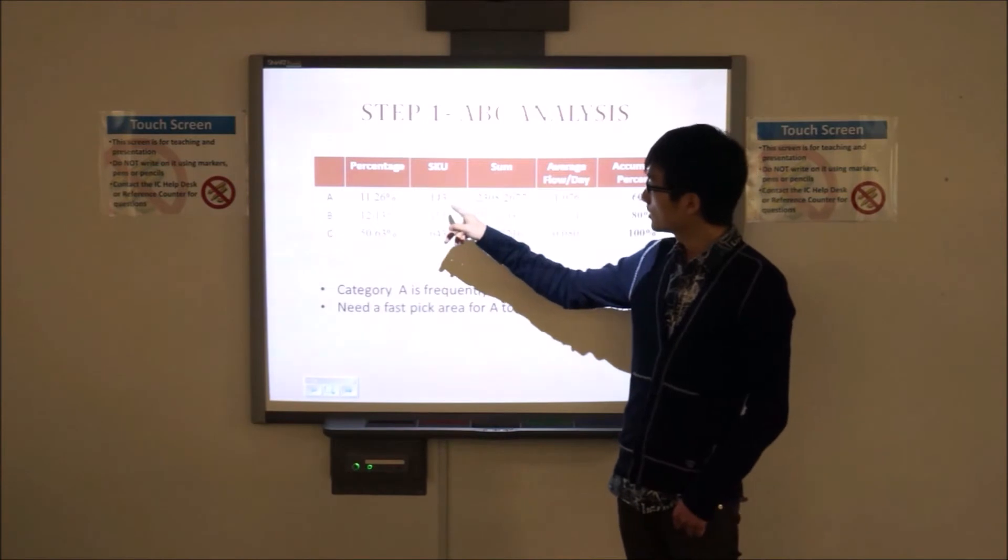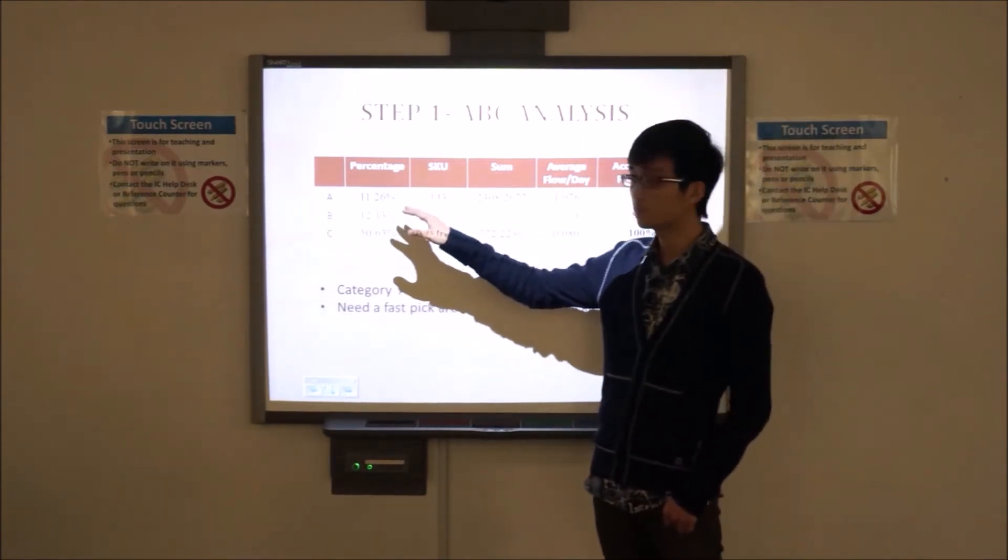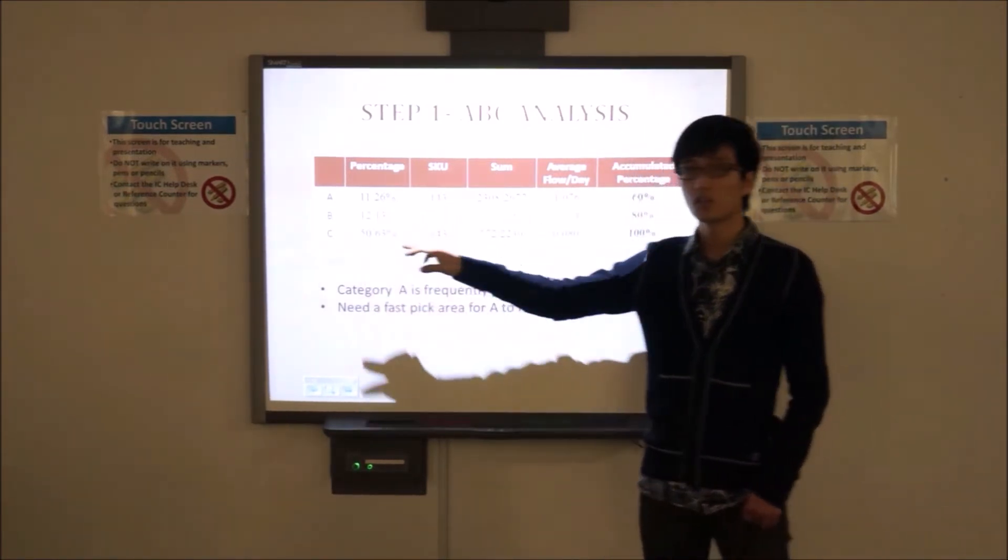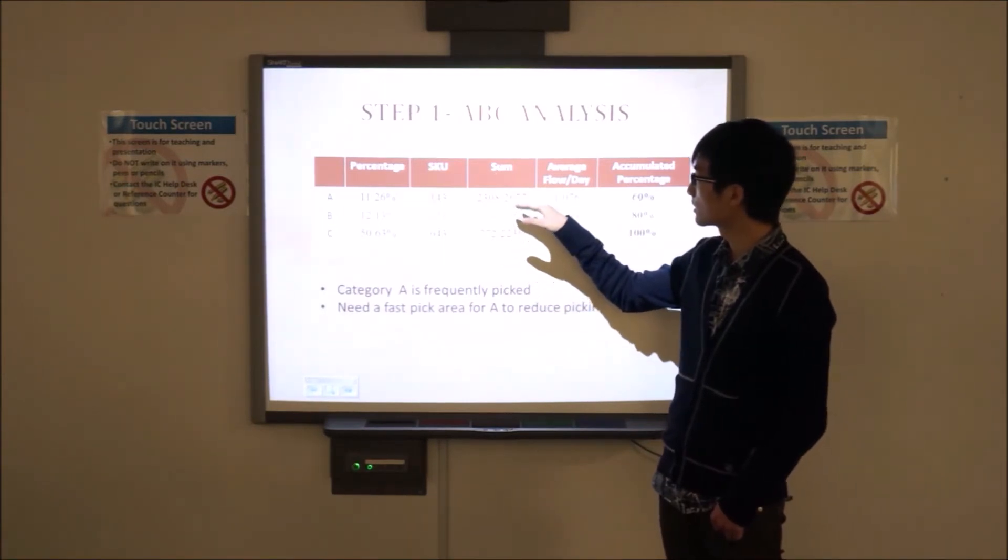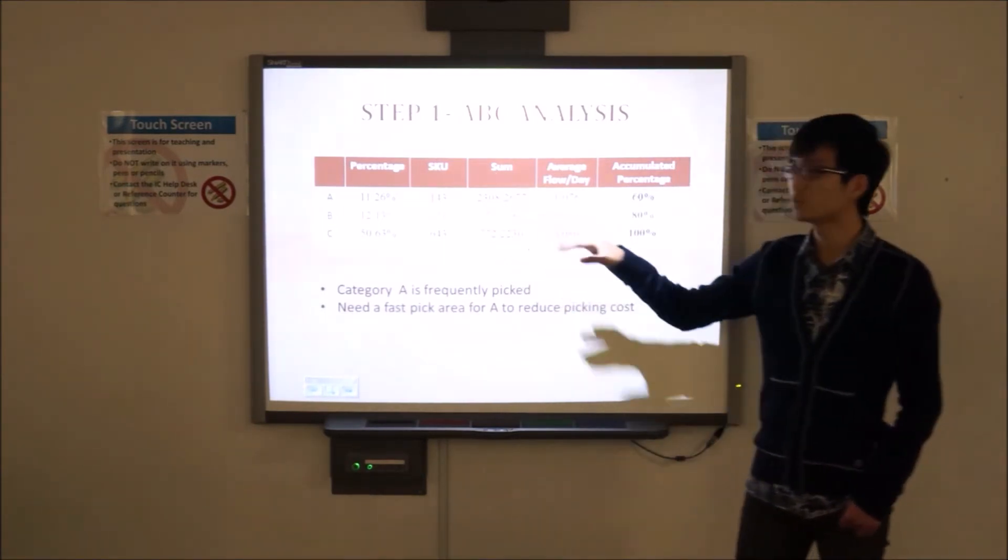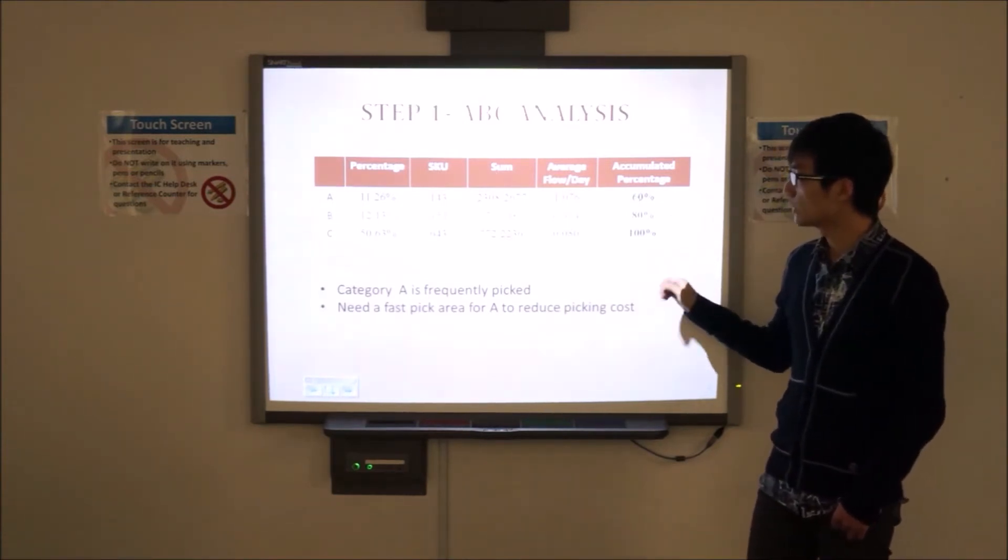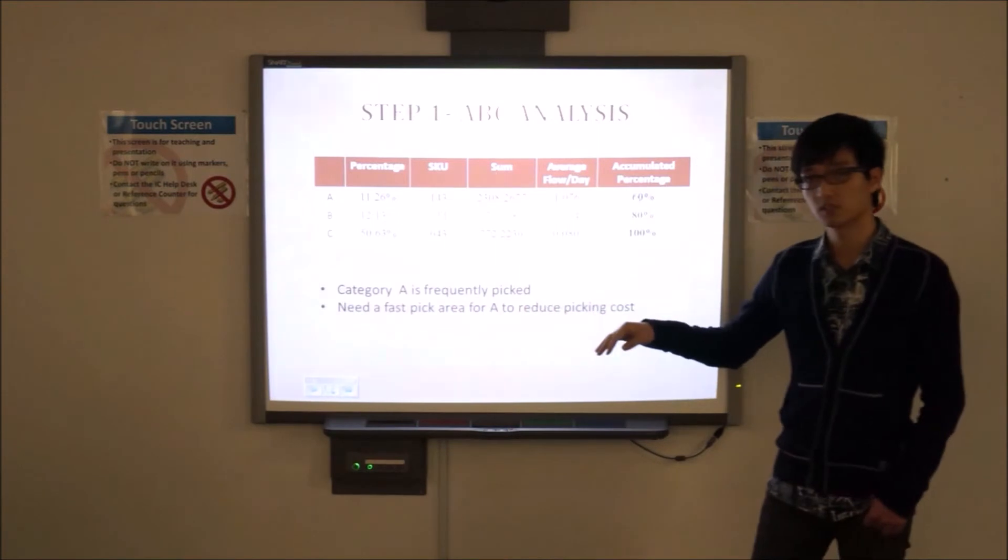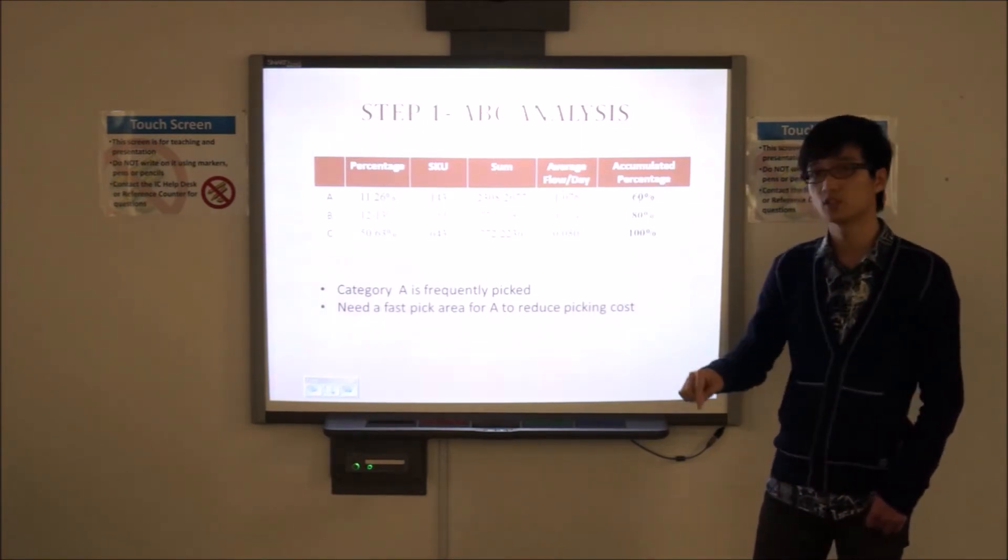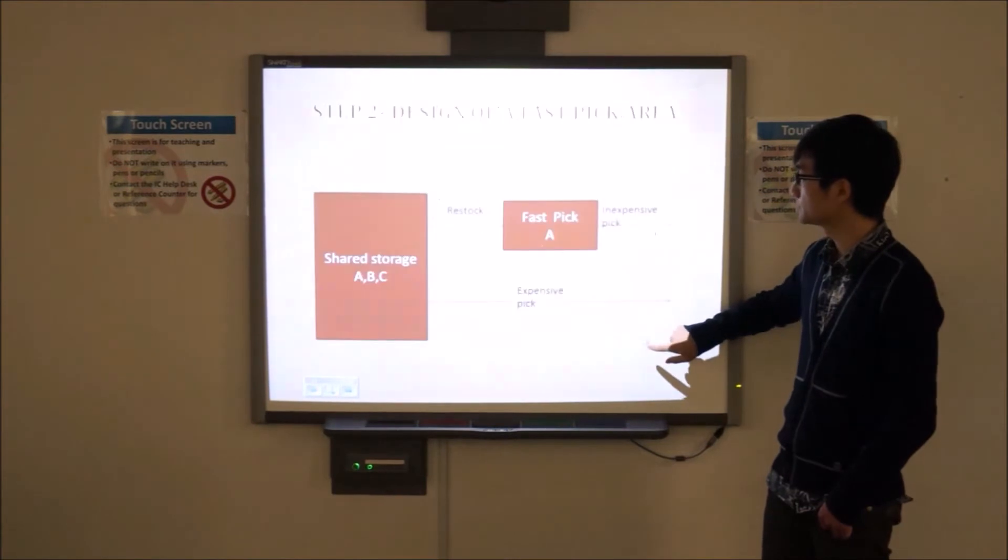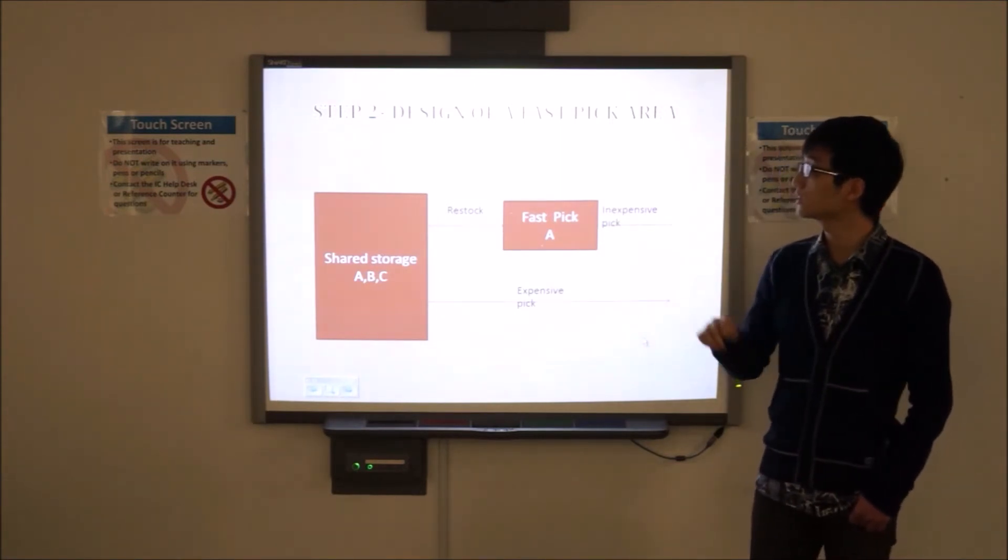From this figure we can see the SKU of category A is 143, and the percentage is only 11.26, which is really small. However, the total number of category A is nearly 2,300, which occupies 60 percent of total products. We can see category A is frequently picked. We need a faster pick area for category A to reduce the picking cost. Next, I will invite Jasmine to give you a further introduction of design of a faster pick area.